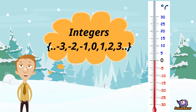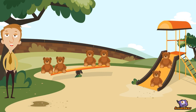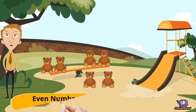If we have numbers which can be written as pairs like teddies in playground, these are called as even numbers, that is numbers exactly divisible by two. The other numbers are called as odd numbers, that is numbers not exactly divisible by two.